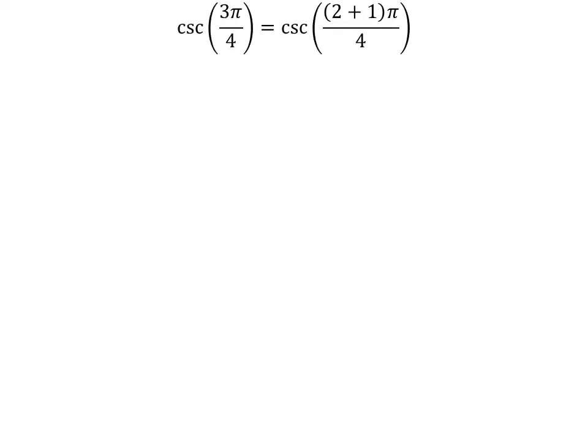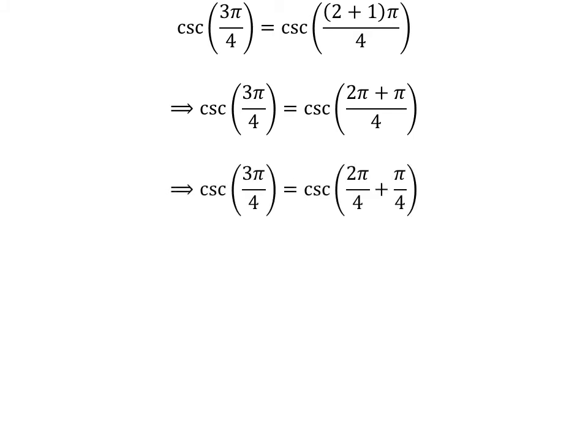Here is the explanation of the second method. We know 2 plus 1 is equal to 3. So, cosecant of 3 times pi upon 4 is equal to cosecant of 2 plus 1 times pi upon 4. Expanding the numerator, we get cosecant of 2 times pi plus pi upon 4. The fraction 3 times pi upon 4 can be expressed as the sum of two fractions, 2 times pi upon 4 and pi upon 4. Cancelling out the common factor gives us cosecant of half of pi plus pi upon 4.